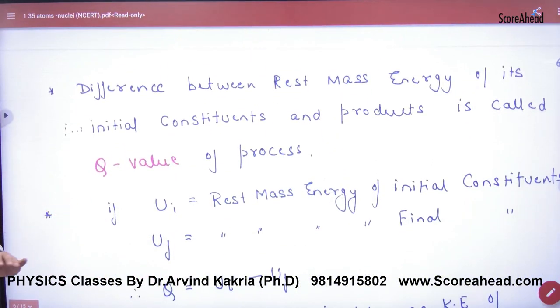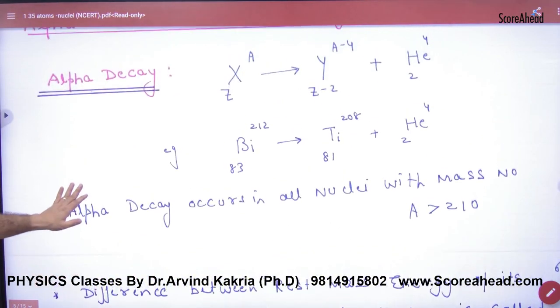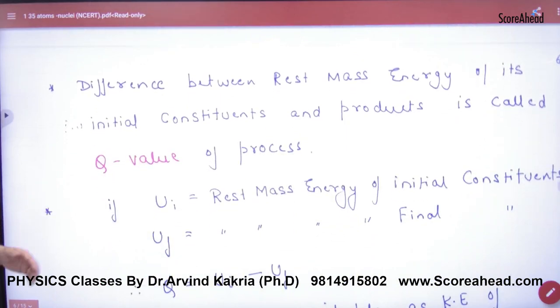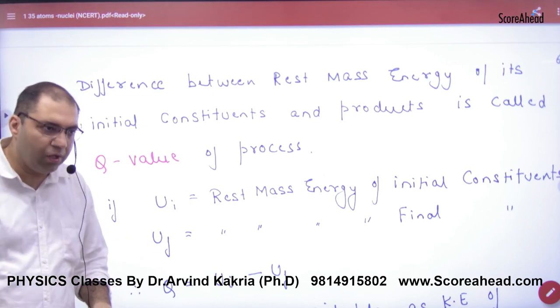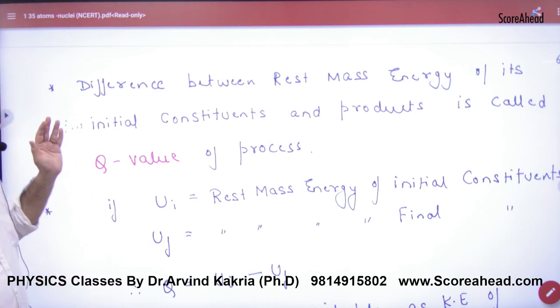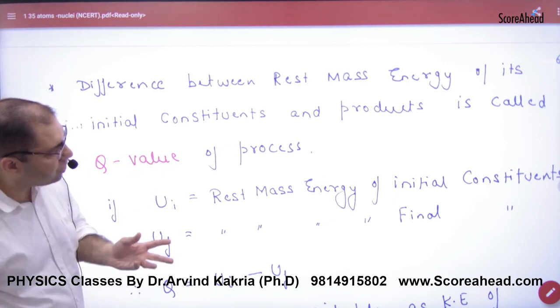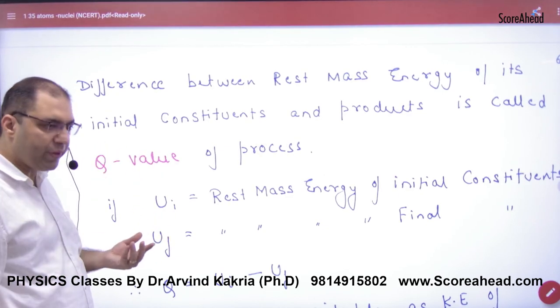Alpha decay is what kind of thing. Now we will use basically a term which is called Q value. We will also study it in detail. What is Q value? Difference between rest mass energy of its initial constituents and products.